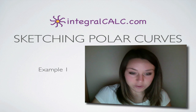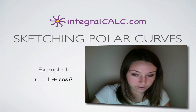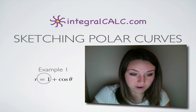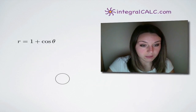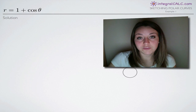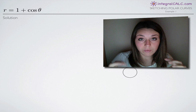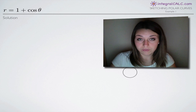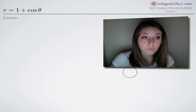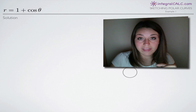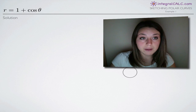Today we're going to be talking about how to sketch polar curves. The polar curve that we're going to be sketching today is r equals 1 plus cosine of theta. The way that I like to sketch polar curves is to first draw them on a rectangular or Cartesian graph — the kind of graph we're normally used to, an xy axis — and then based on what we find, translate it to a polar graph.